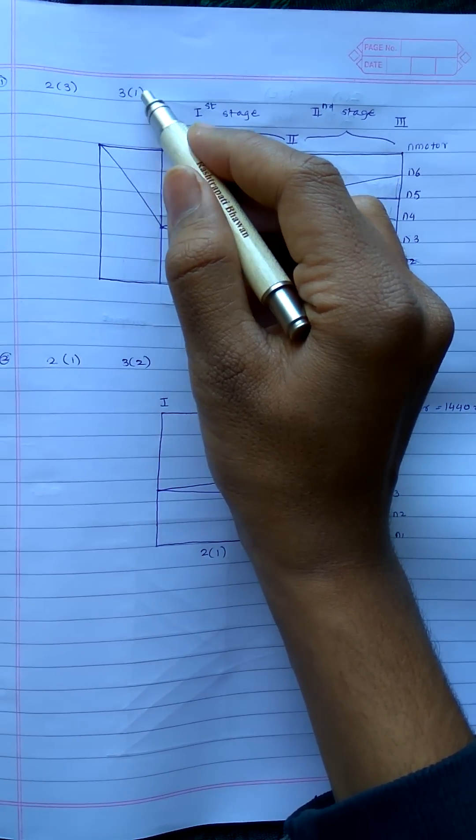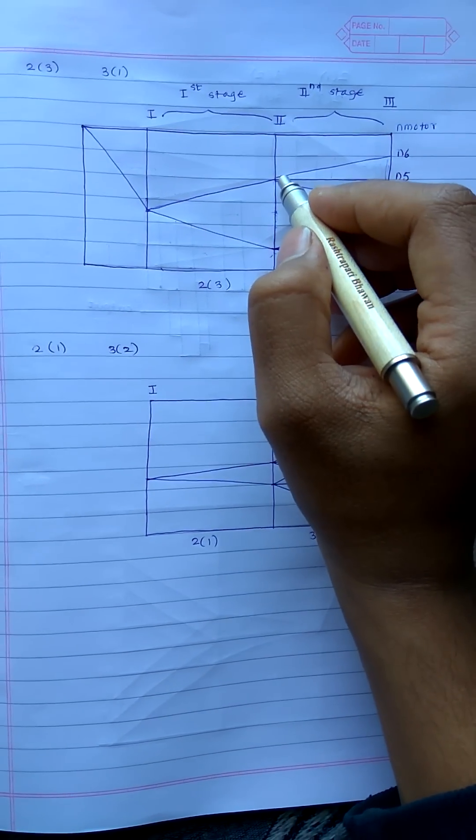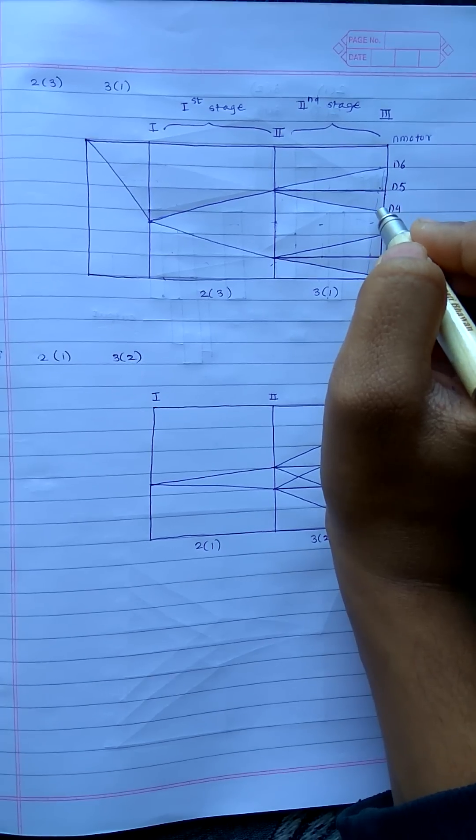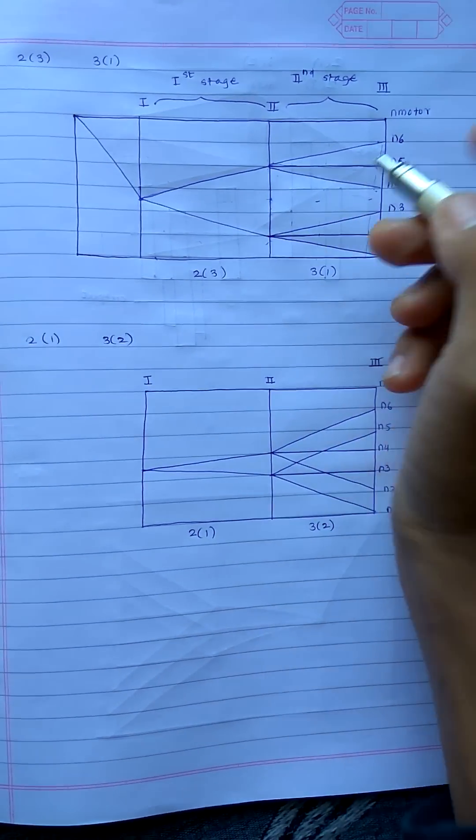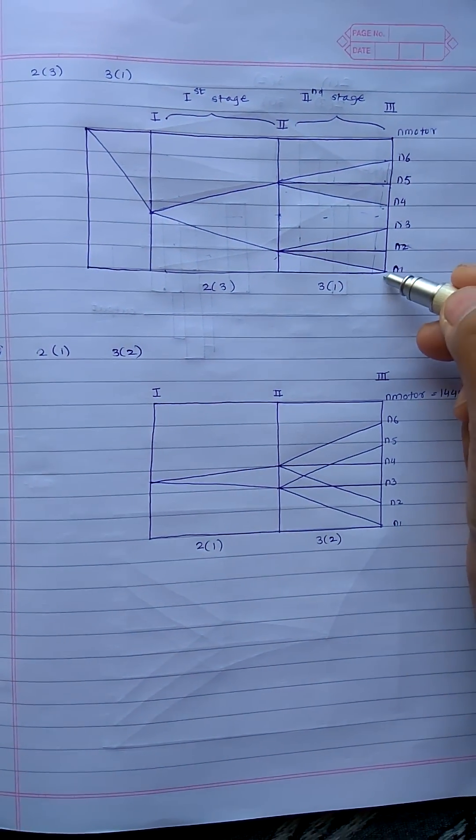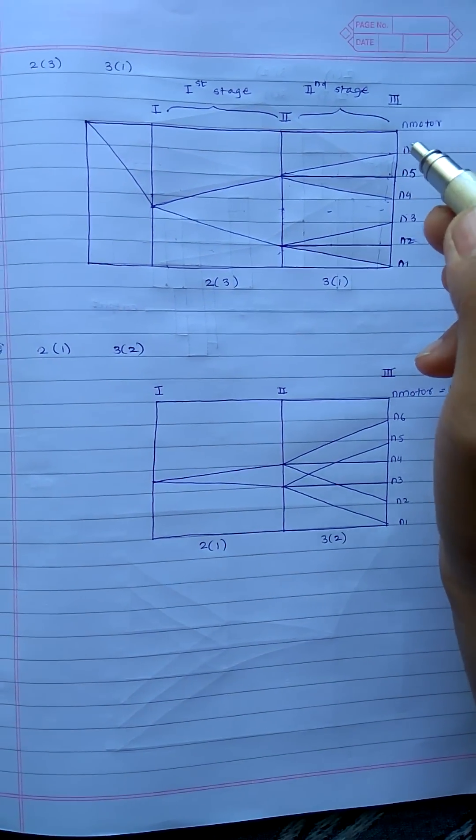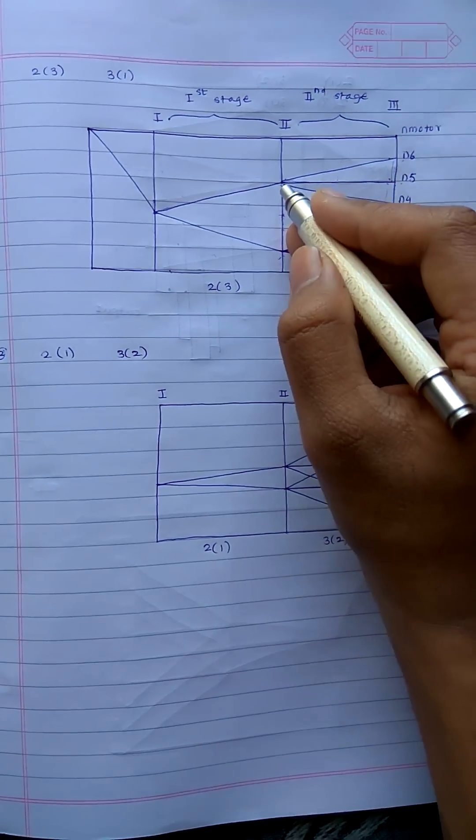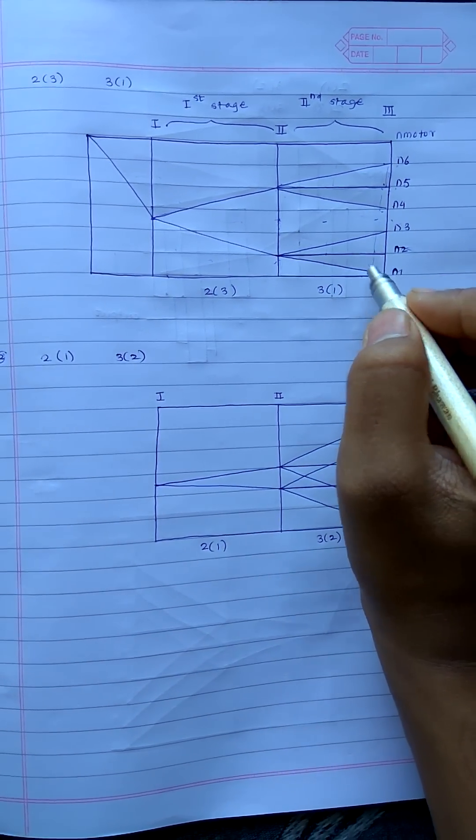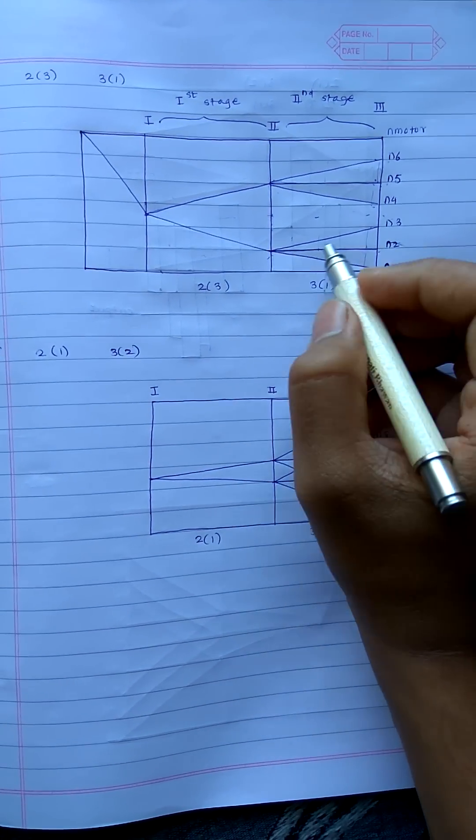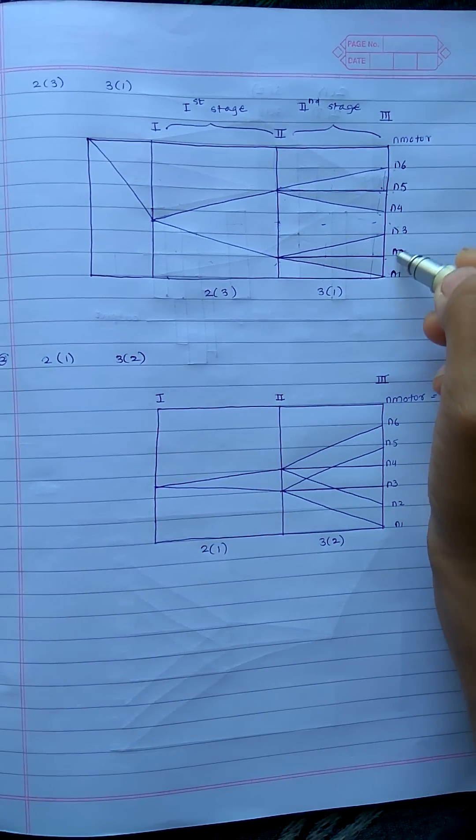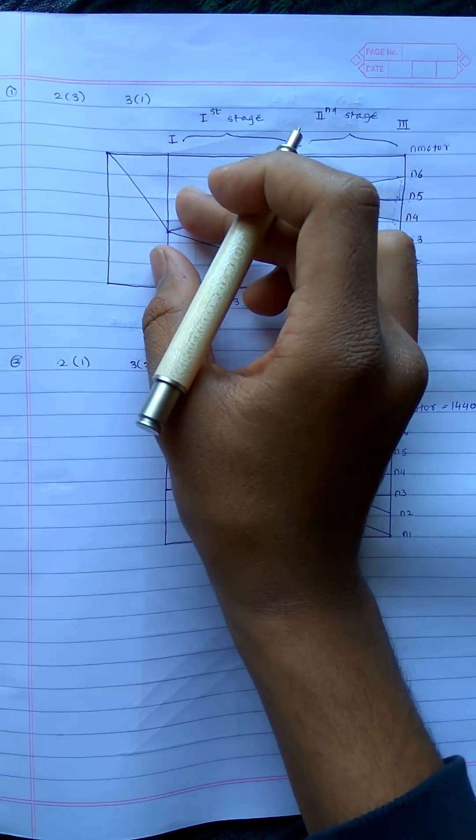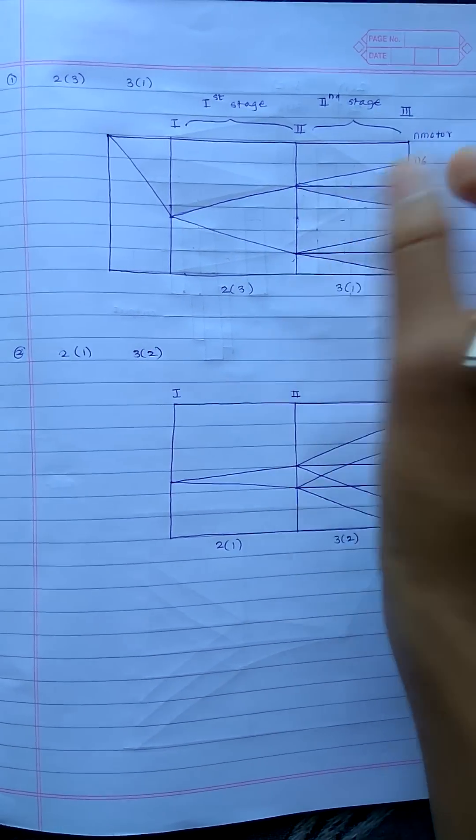The next step is drawing 3 lines with a gap of 1 between them. The first line will always lie where the line ended. Taking a gap of 1, drawing 2 lines inclined. You have to make sure that in the end, when you reach the output shaft, all the speeds are connected to the inclined lines. If not connected, you are going wrong somewhere. n6 is connected, n5 and n4 are connected to the first line, n3, n2, and n1 are connected.